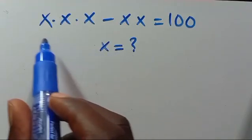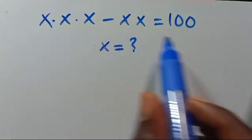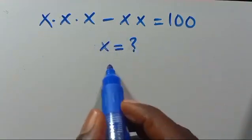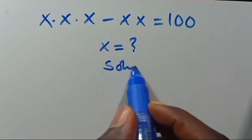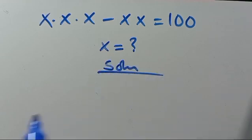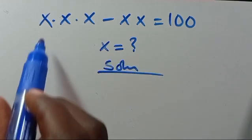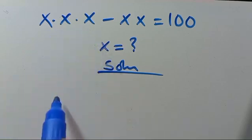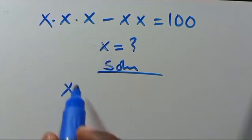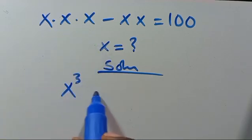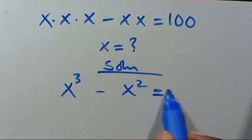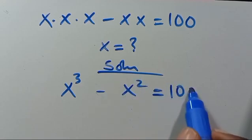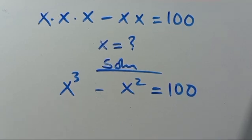What is the value of X given that you have this? Let's find the solution. We have X times X times X, which is X to the power of 3, minus X times X, which is X squared, equals 100.